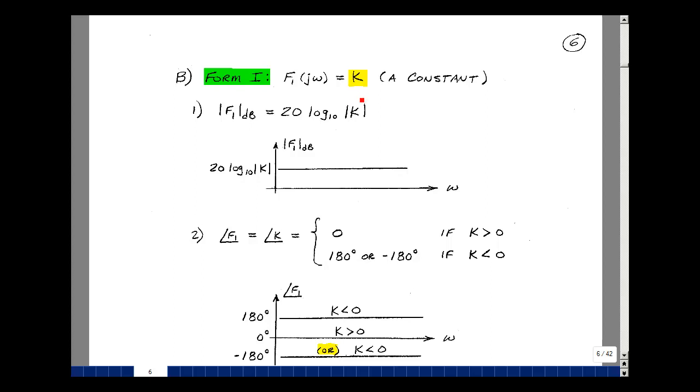If this constant were positive, then the phase angle would be zero, and that would just be zero degrees versus frequency, not changing with frequency. Then the other case would be having a minus sign in front of this. It doesn't show up in the magnitude, but just the angle. It'd be a plus 180 or a minus 180.